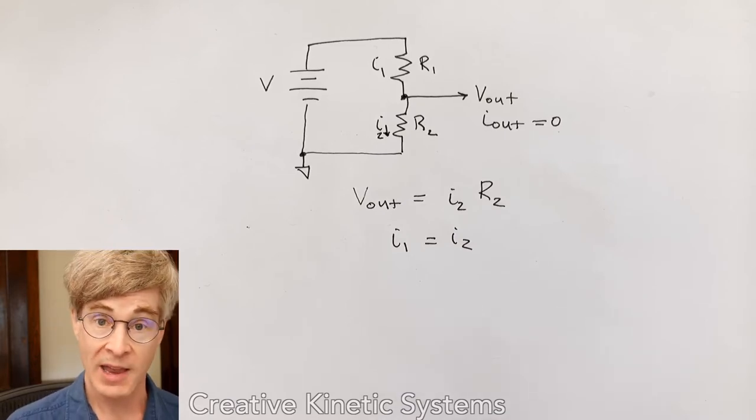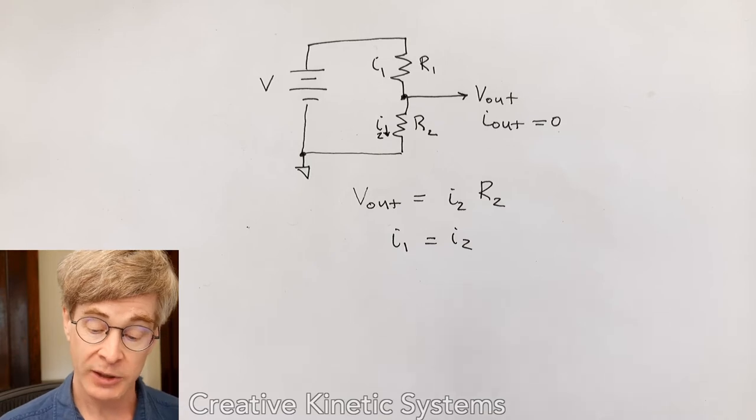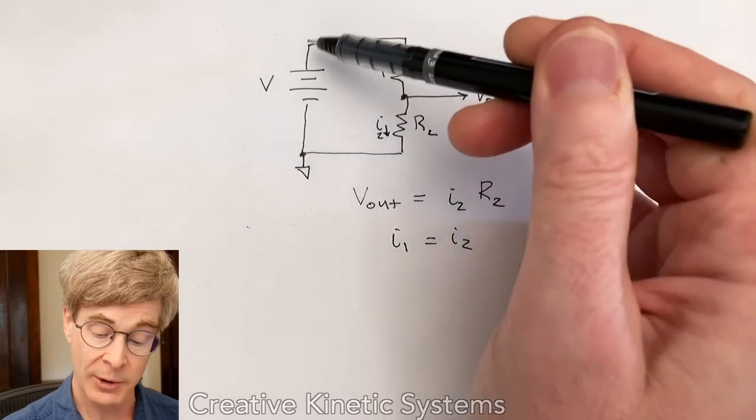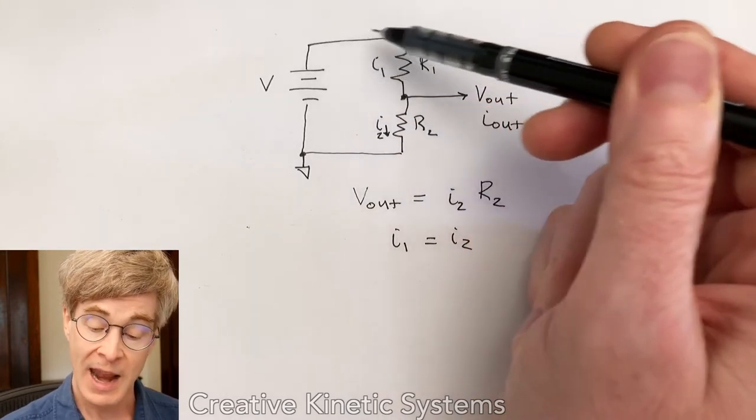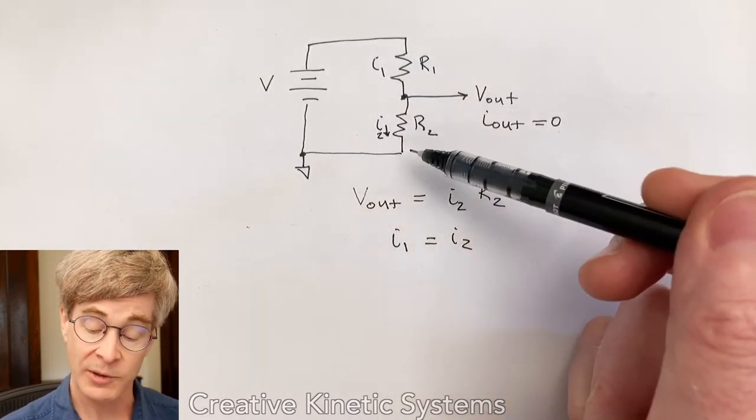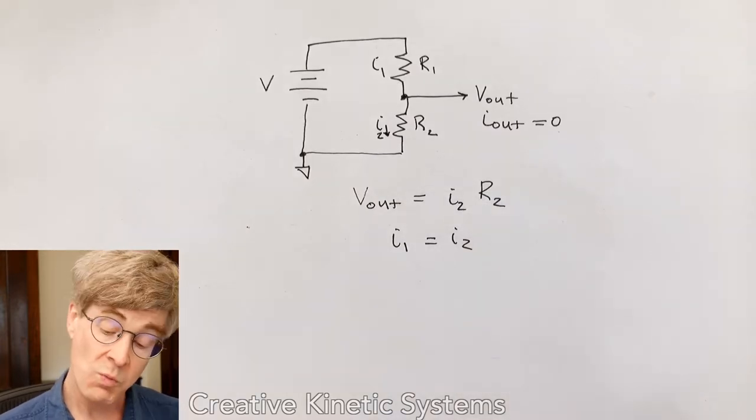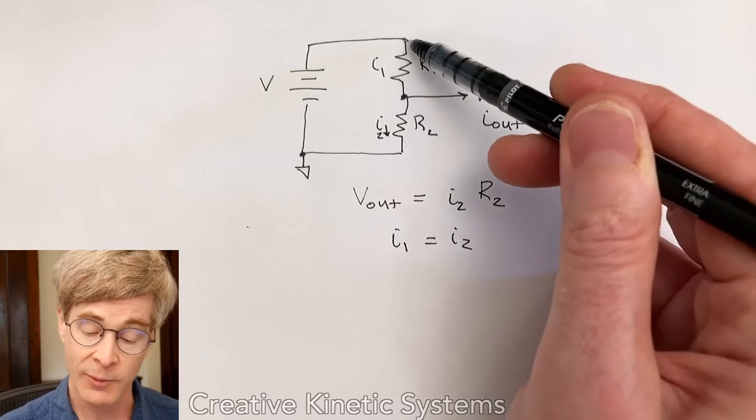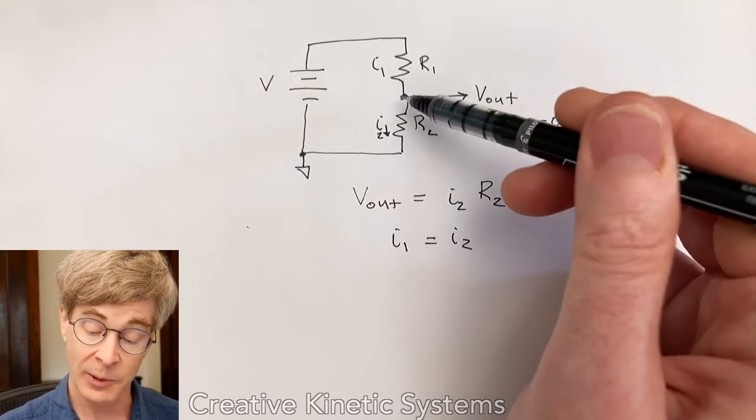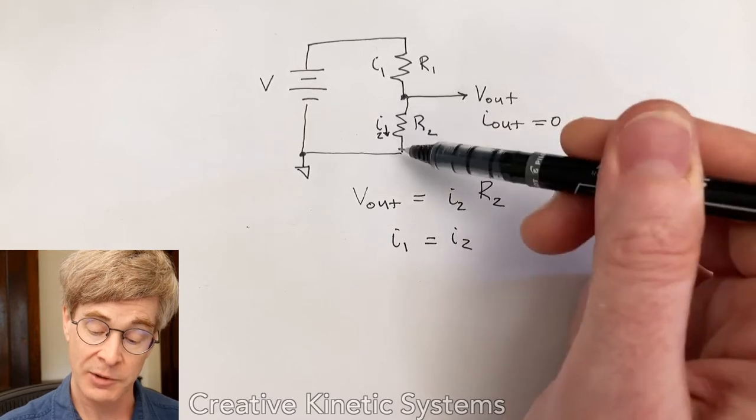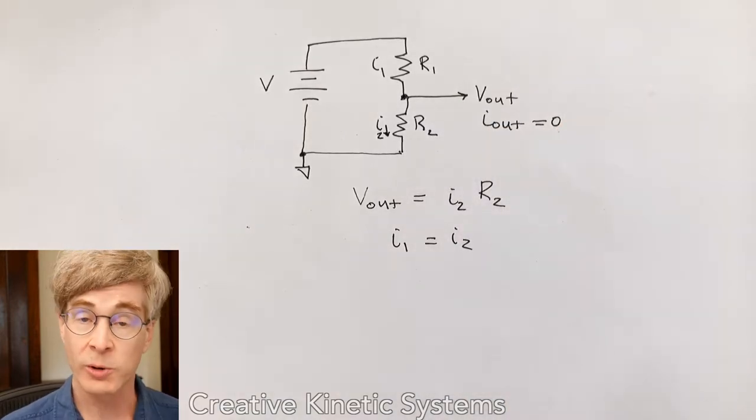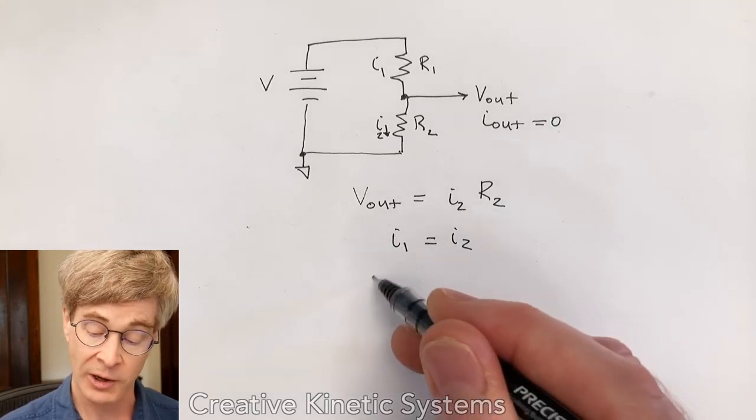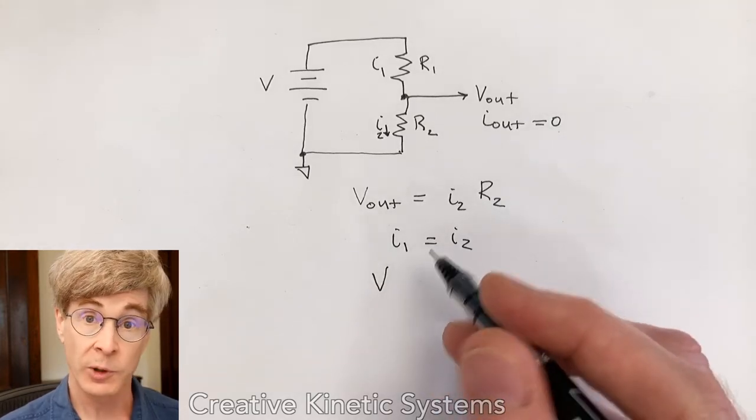We can also now apply Kirchhoff's voltage law to look at the voltage around the loop. So there's a battery voltage, and we're looking around the loop from the bottom of the battery to the top, that's some negative voltage. And then the voltage coming down comes across the two resistors. So we can see that there's a voltage across R1 from the top node to the middle of the bridge, and then a voltage across R2 from the middle of the bridge to ground. But that total voltage has got to be equal to the battery voltage. And that comes from basically applying Kirchhoff's voltage law.